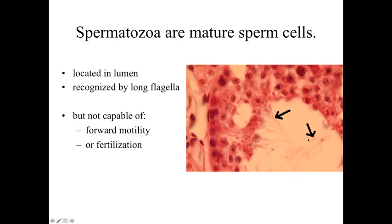It's important to recognize that once these cells are sitting within the lumen of the seminiferous tubules, they're mature but still not capable of forward motility — that'll come within the ductus epididymis — and they're not yet capable of fertilization. They're going to respond to factors within the female reproductive tract, which will allow them to bind to the surface of the egg and fertilize it. So for all intents and purposes they look mature at this point, but there are still a couple of developmental processes that need to occur as they pass through both the male reproductive duct system and the female reproductive tract.